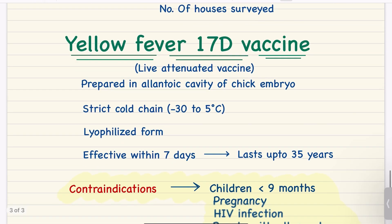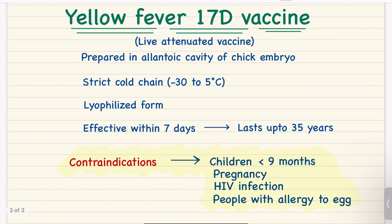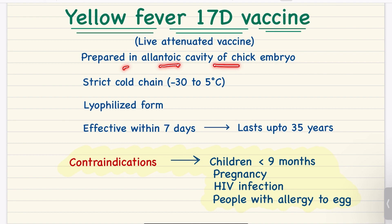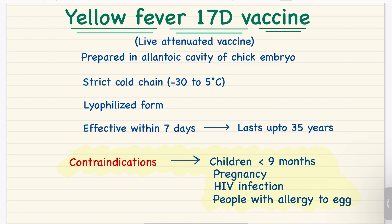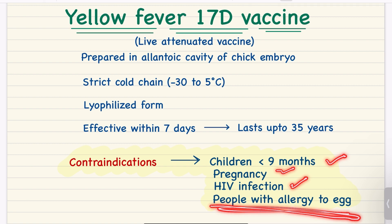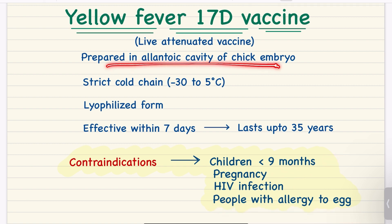The yellow fever 17D vaccine is a live attenuated vaccine prepared in the allantoic cavity of chick embryo. Strict cold chain must be maintained at minus 30 to 5 degrees Celsius. It is stored in lyophilized form, is effective within 7 days, and lasts up to 35 years. Contraindications include children less than 9 months, pregnant ladies, HIV infection, and people allergic to eggs — because it is prepared in the allantoic cavity of chick embryo.